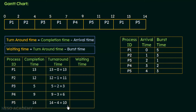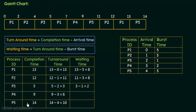Using the turnaround times, we can now calculate the waiting time, which is turnaround time minus the burst time. For p1: 13 minus 5 equals 8 units. For p2: 11 minus 3 equals 8 units. For p3: 3 minus 1 equals 2 units. For p4: 6 minus 2 equals 4 units of time. For p5: 10 minus 3 equals 7 units of time. We have now calculated the turnaround times and waiting times for all processes.